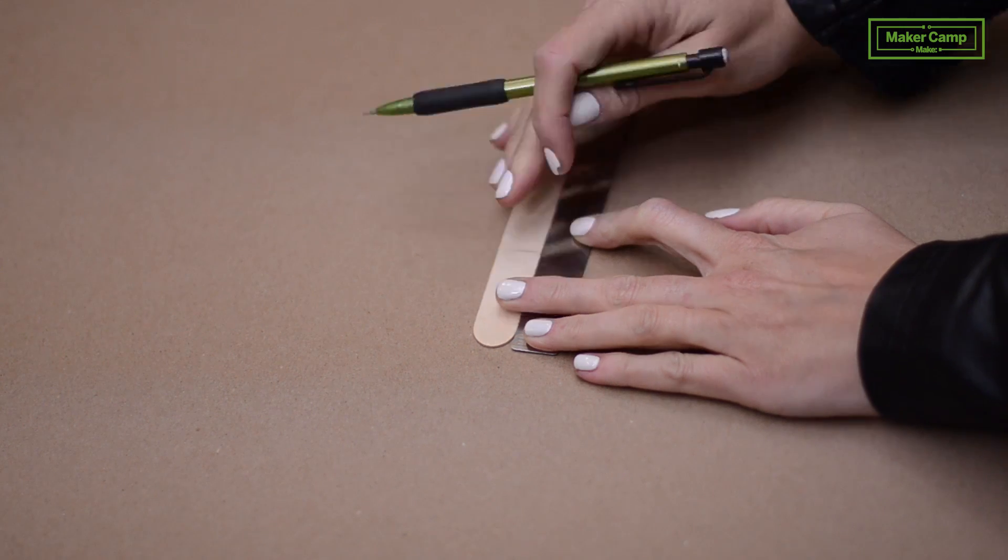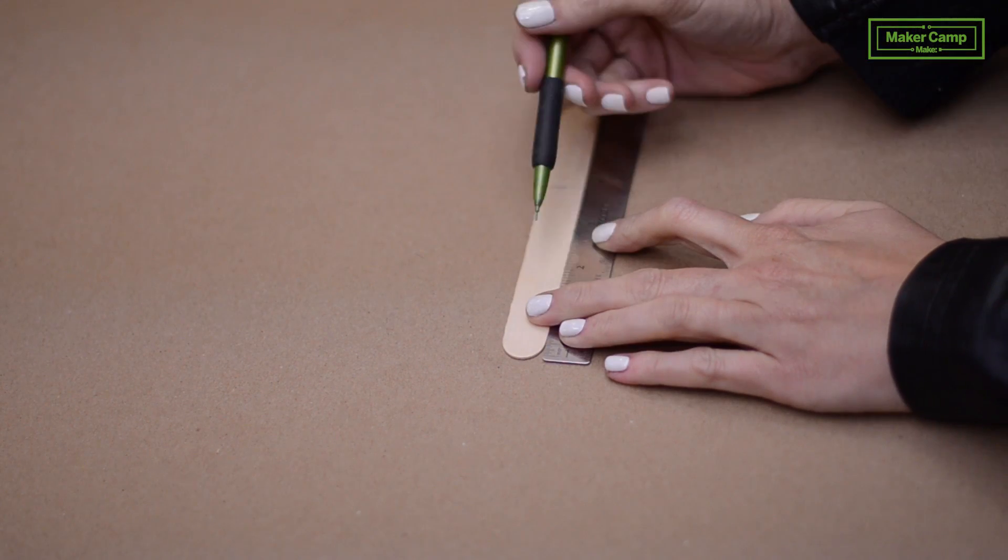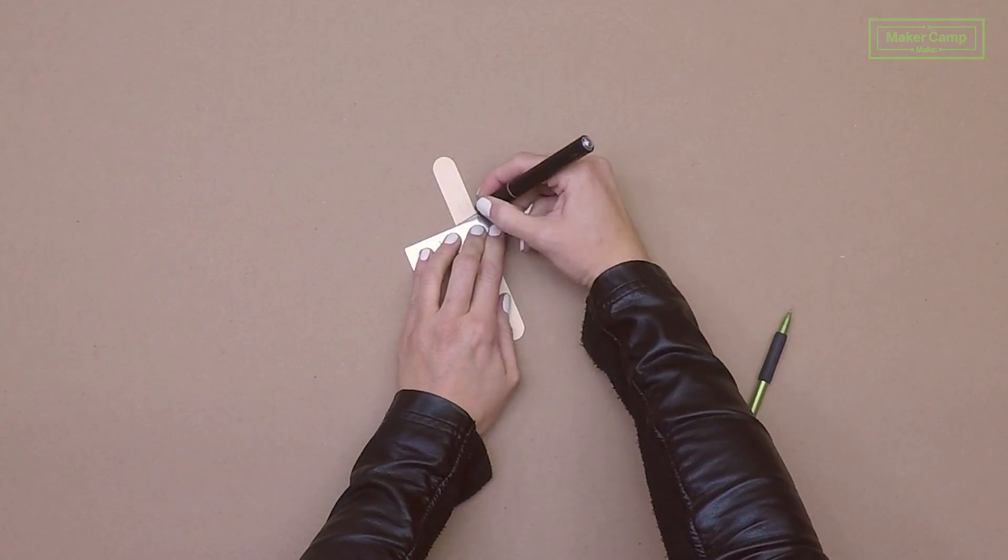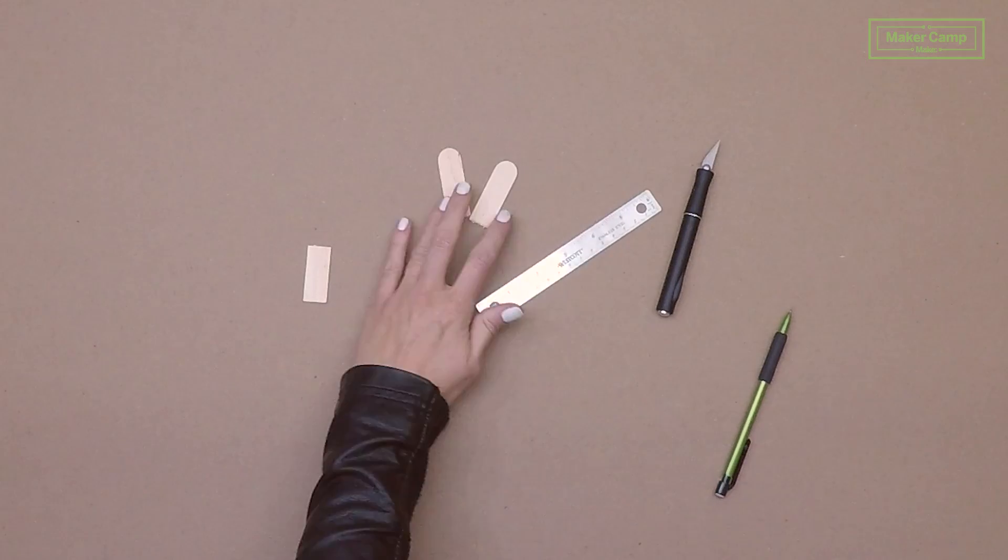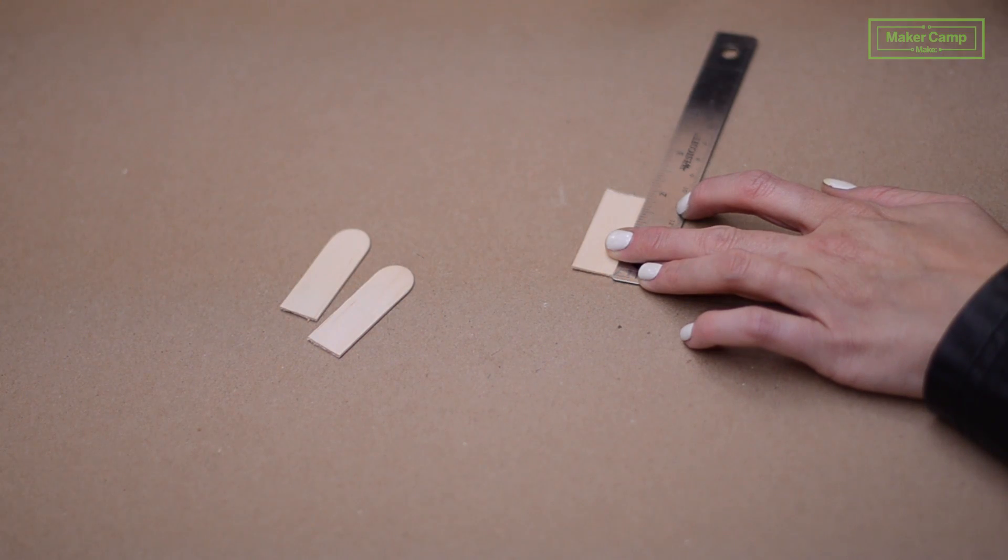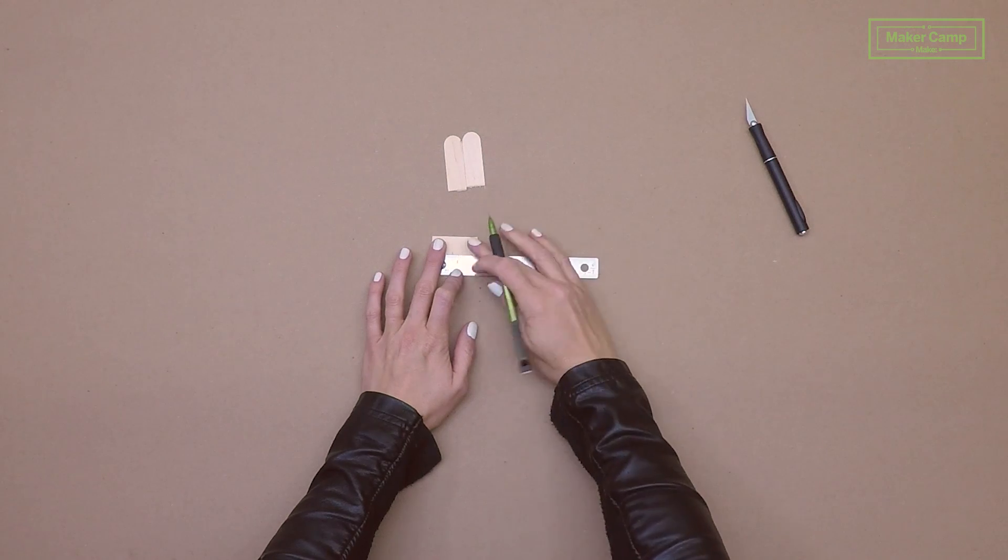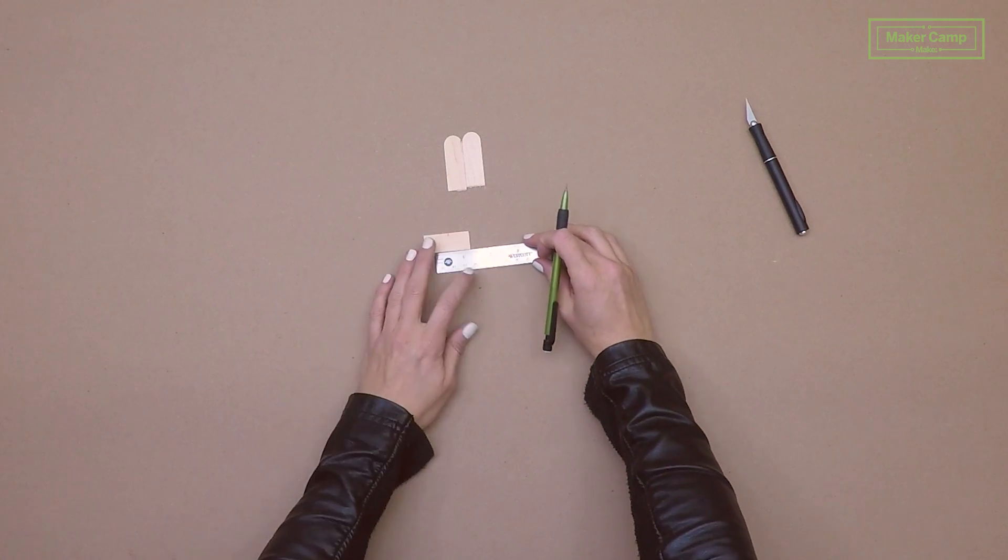First we're going to make our winning pockets. Start by marking two inches in from each side of your tongue depressor. Use your craft knife and a metal straight edge to make your cuts. With the middle part of your tongue depressor, mark down an inch and a quarter. From your inch and a quarter mark, measure up 5 eighths of an inch on either side.